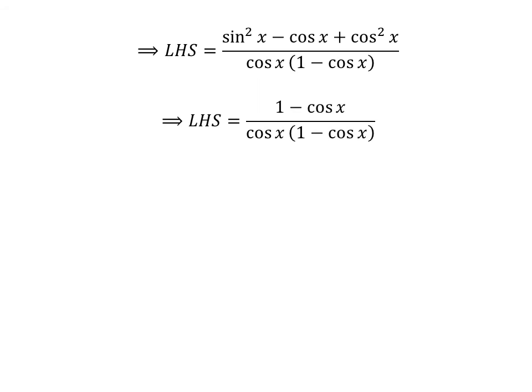We know square of sine of x plus square of cosine of x is 1. So, the left hand side of the identity is equal to 1 minus cosine of x upon cosine of x times 1 minus cosine of x.